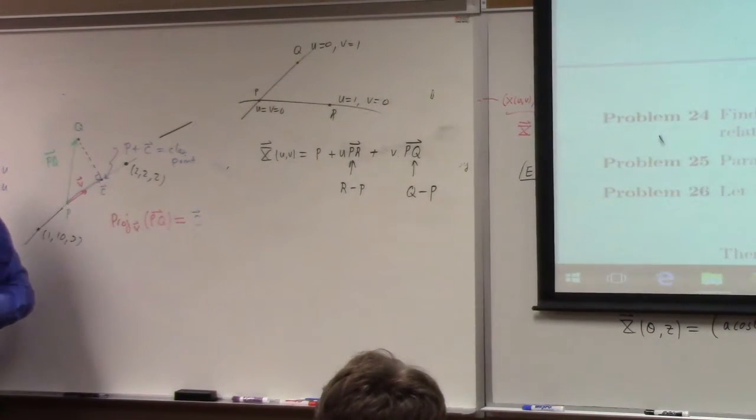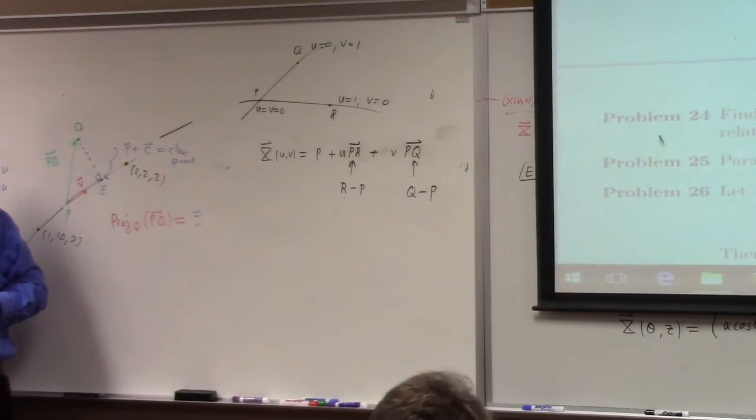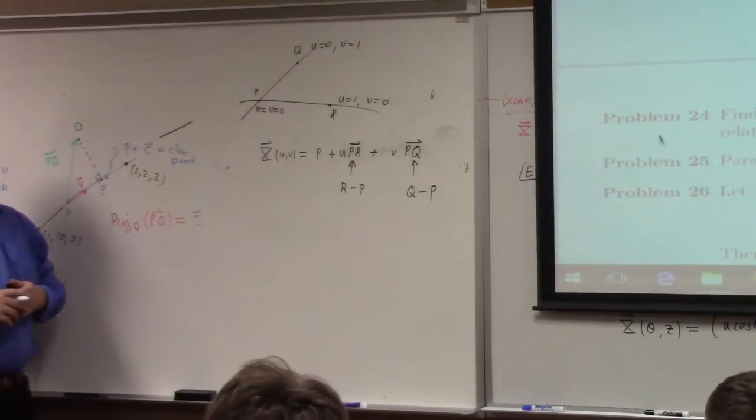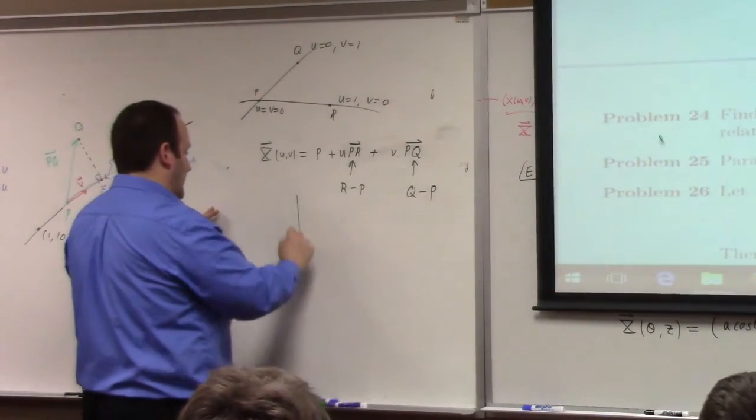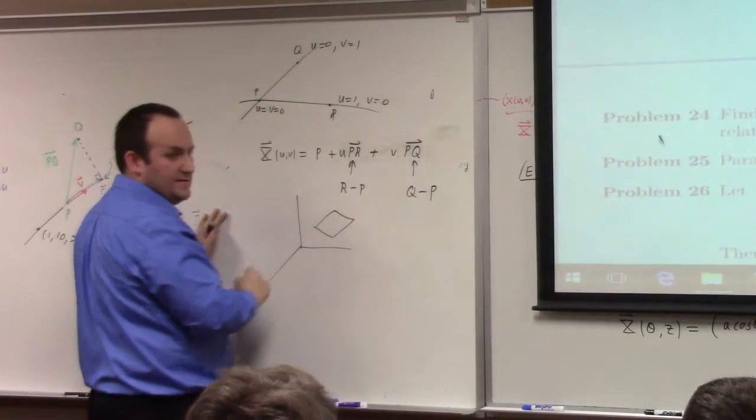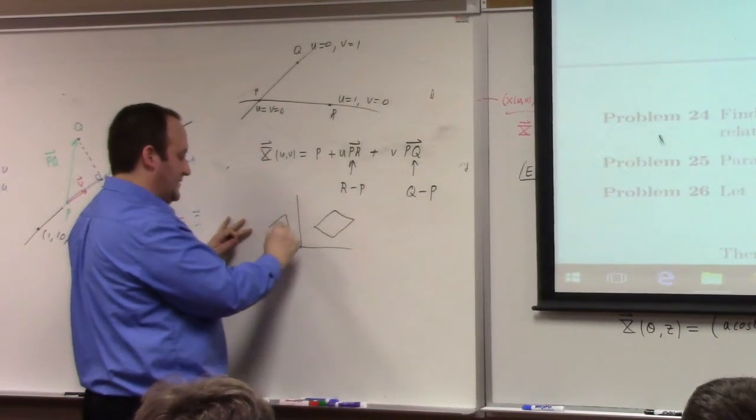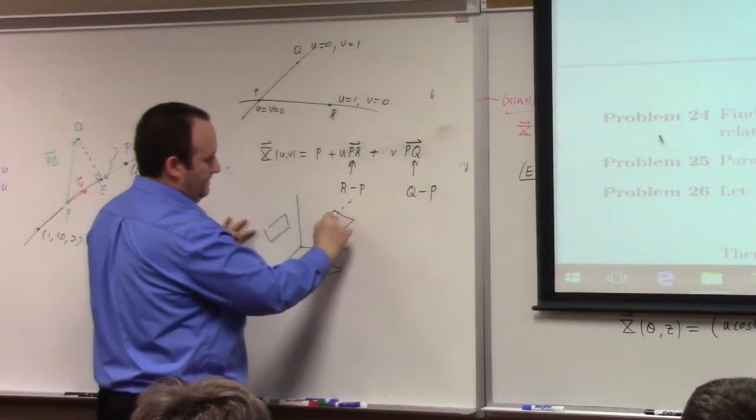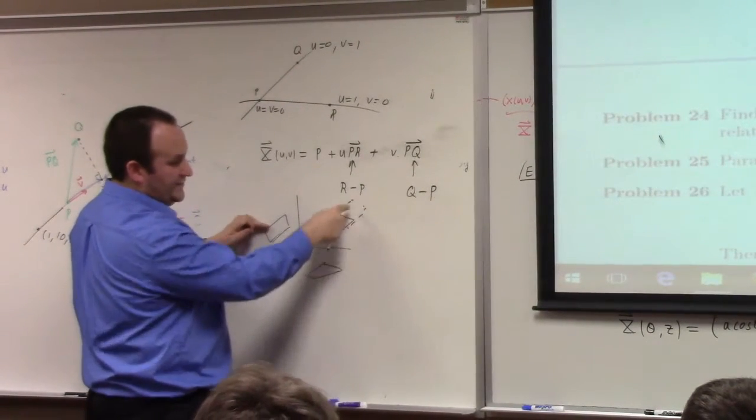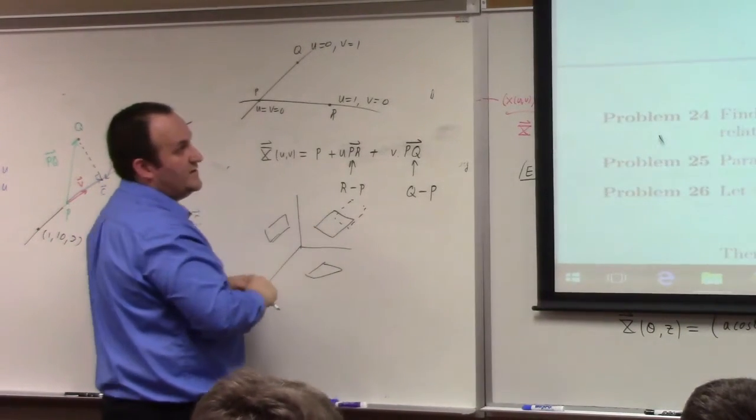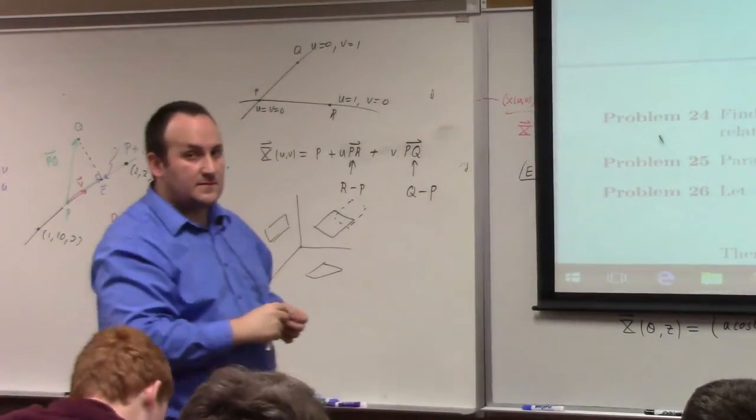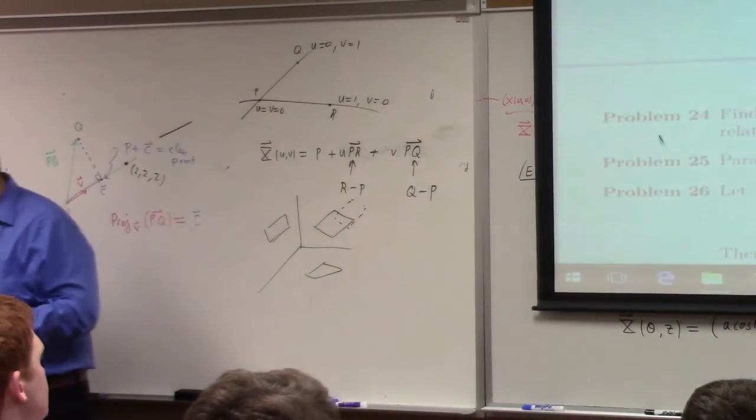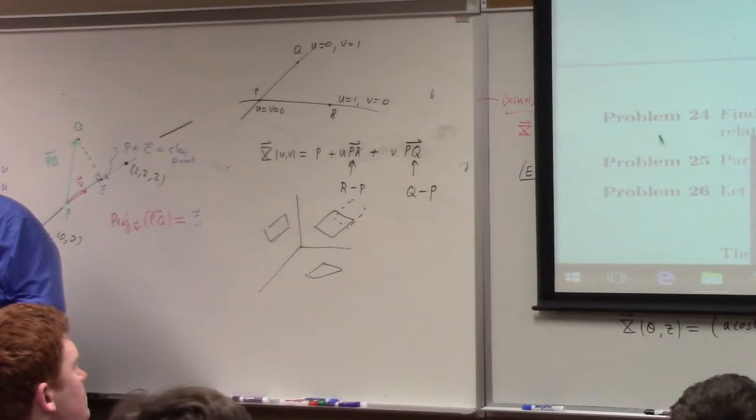My hope of ending class two minutes early seems to be vanishing before our eyes. So, Michael, the problem 24, you actually have to think about the parameterization of the parallelogram out here, and it's gonna have shadows onto the coordinate planes back here. And the question is, how do the areas of the shadows relate to the area of the plane itself? This is a challenging question compared to some of the other ones in the homework, so... But it's interesting, the answer is interesting. So I don't want to ruin it.